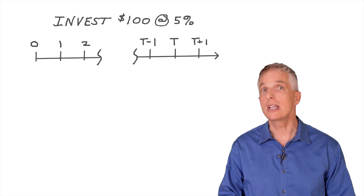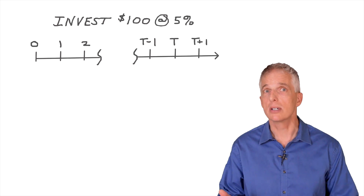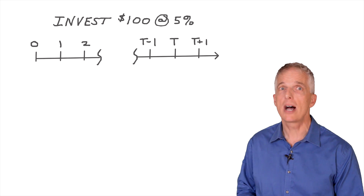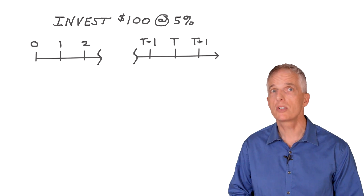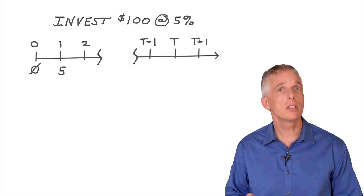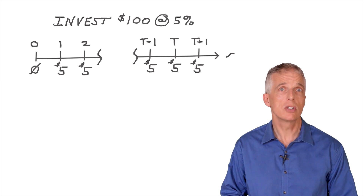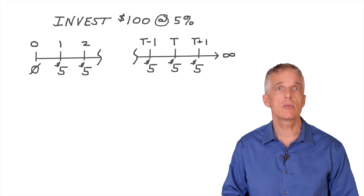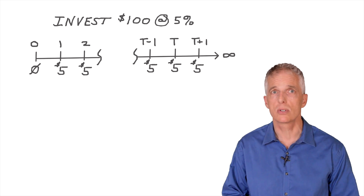Let's start with a simple example. Let's say that you are able to invest at a risk-free annual rate of 5% forever. If you invest $100 in this account, you will receive a $5 return each year forever. Now let's put these $5 interest payments on a timeline. Note that these payments last forever, assuming the 5% interest rate continues to prevail into the future.